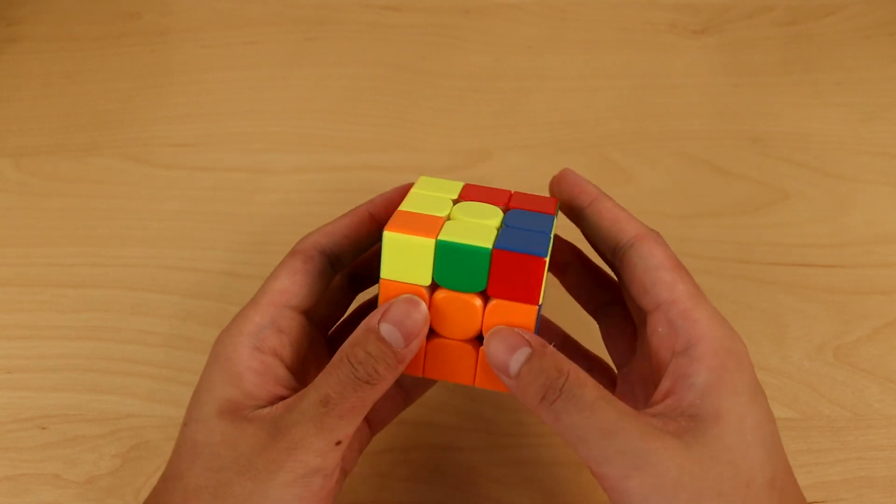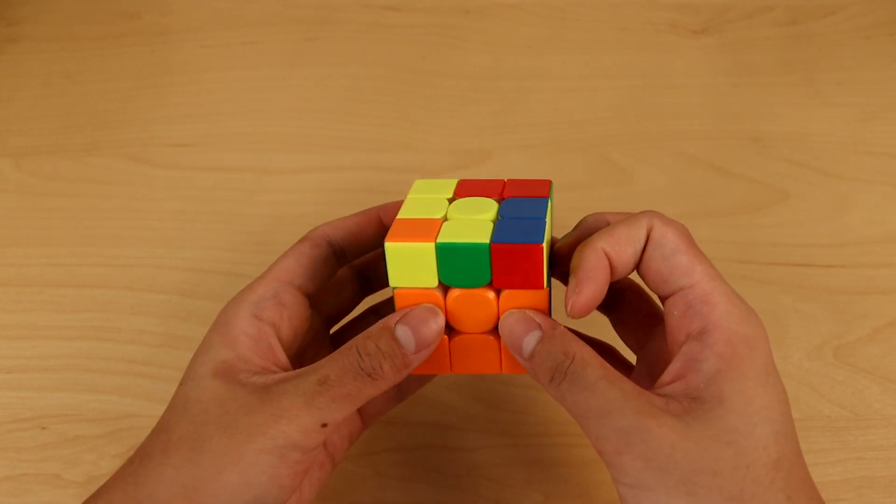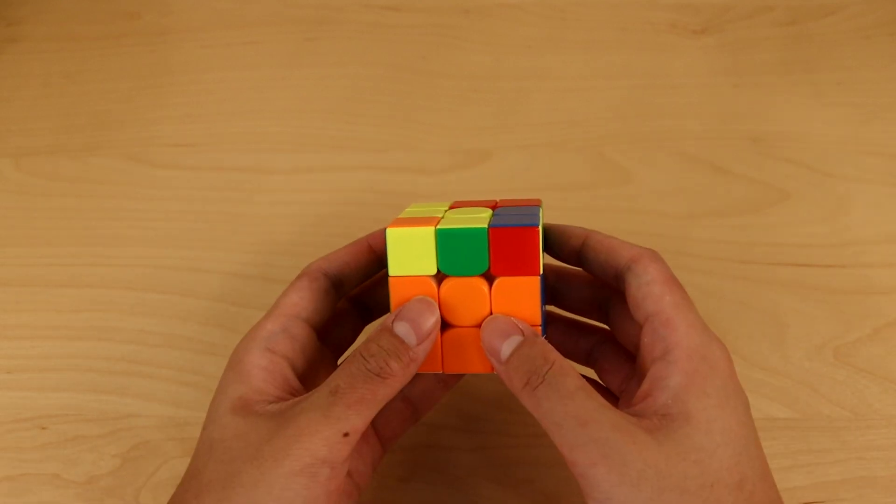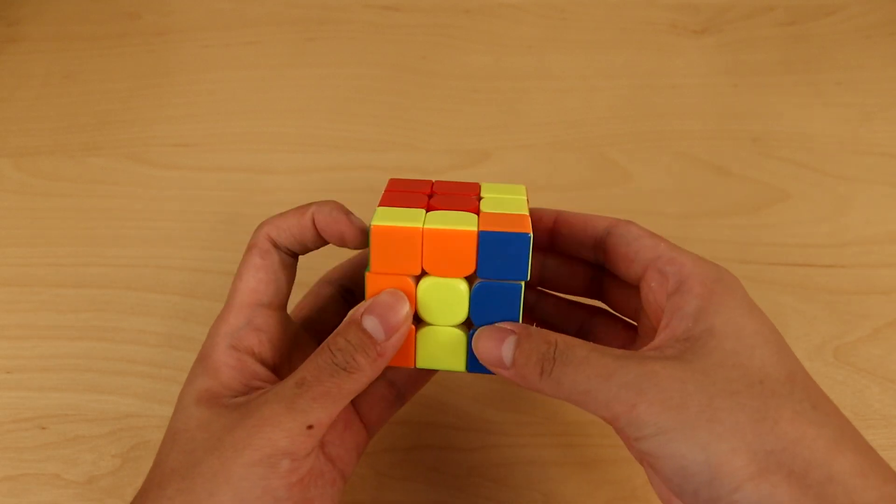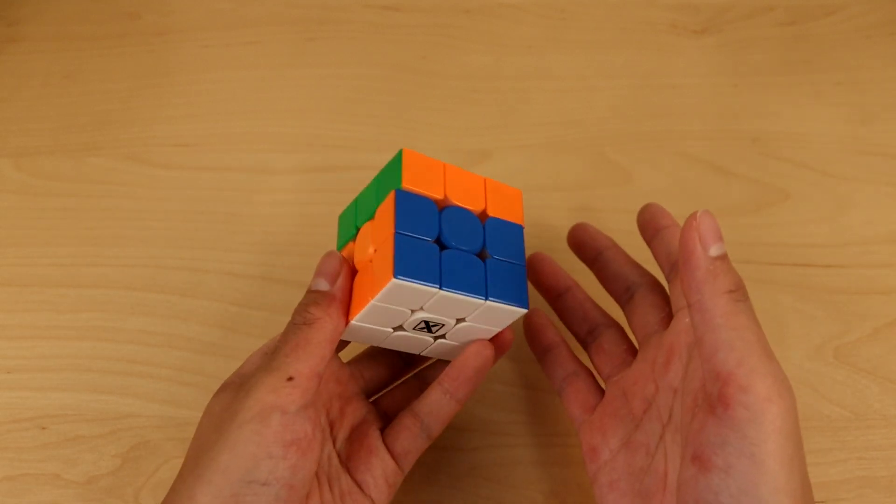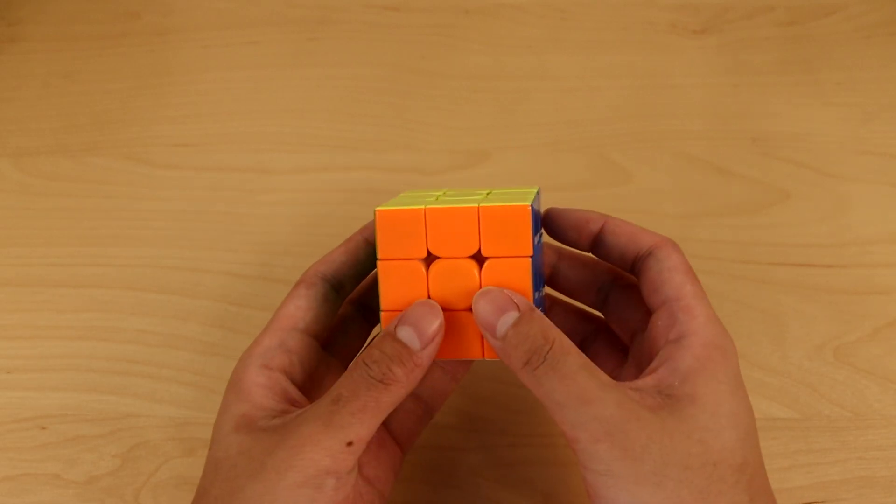Now we have a fat sune for OLL. You can do it with your left hand, or you can do it from the back with your right hand. Max does this from the back because it's better for this angle. And then PLL skip, and U solves the whole cube.